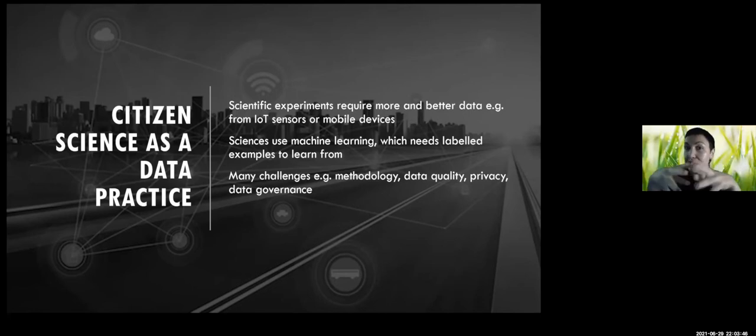Just to summarize what citizen science means to me as a data practice, scientific experiments in pretty much any discipline require more new, better types of data. And they engage in new forms of data collection, including sensors, including mobile devices, including social networks, and sciences use AI in particular machine learning, which does need labeled examples to learn from. From a data point of view, there's many challenges and Marissa has articulated some.